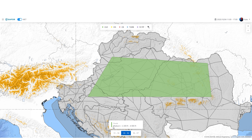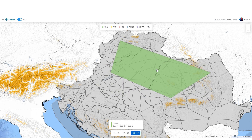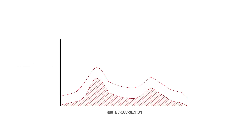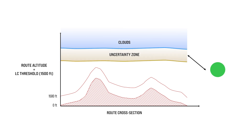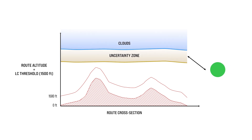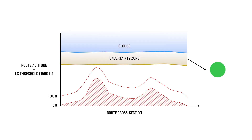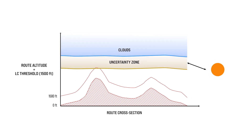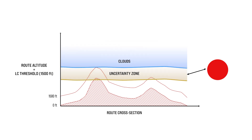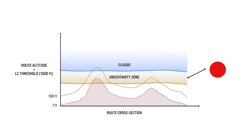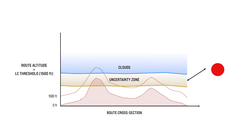Clouds are forecast as polygons representing horizontal spread. Cloud base is forecast in feet above mean sea level. Since it's difficult to forecast the exact altitude of the cloud base, we introduced the uncertainty zone — a zone between the minimal and the maximal altitude of the forecast cloud base. eGafor shows the impact on each route affected with ground elevation and 1,500 feet from the upper and lower boundary of the uncertainty zone over the cloud's polygon along the route cross section.